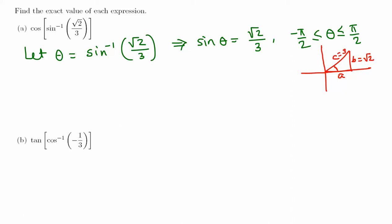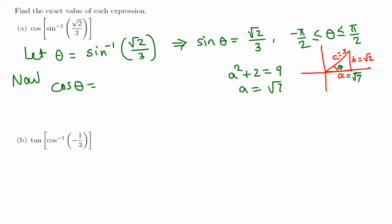We need to find side A using the Pythagorean theorem: A squared plus B squared equals C squared. So A squared plus 2 equals 9, giving A squared equals 7, so A equals root 7 (positive). Now cosine of theta is adjacent over hypotenuse, which is root 7 over 3. That is the final answer.